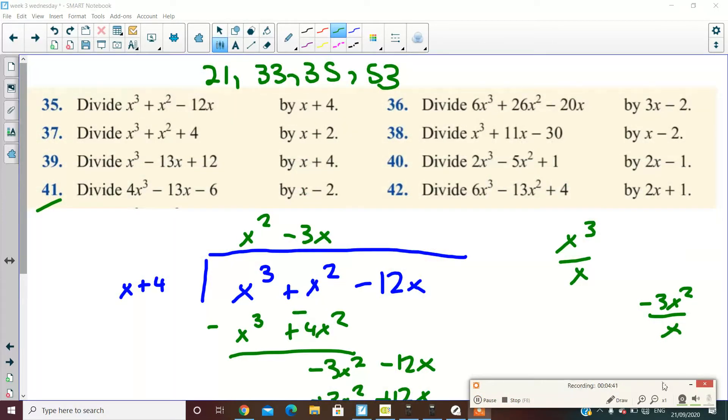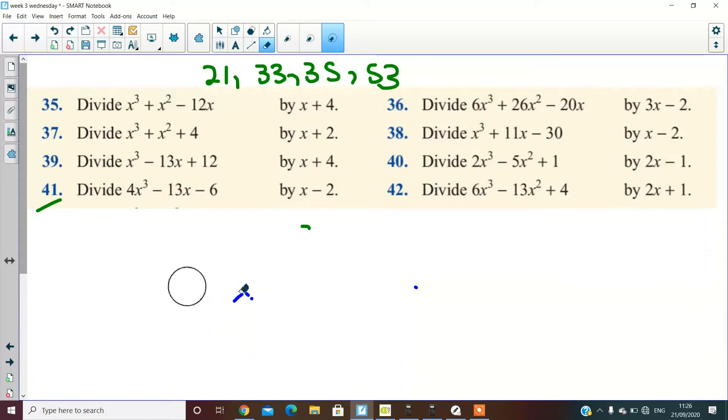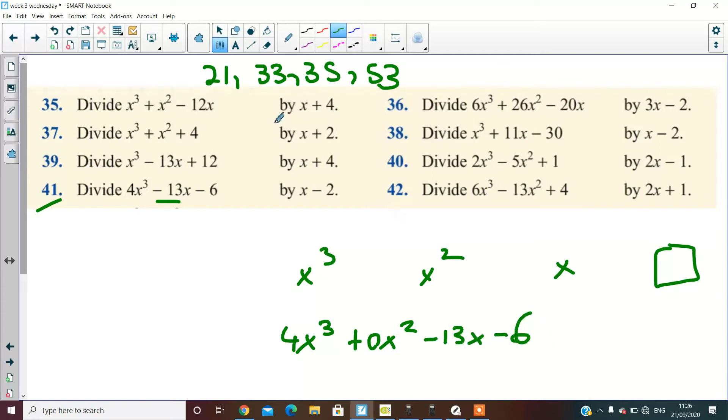Before I do it, what happens with these questions is, usually we get what's called a cubic equation. A cubic equation is an equation that has an x³ part, an x² part, an x part, and then a regular number at the end. But it's not always guaranteed. Okay? So in question 41, we have 4x³. No bother. But we don't have an x² part, do we? So we add in 0x². Then we add in minus 13x minus 6. Is that right?